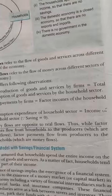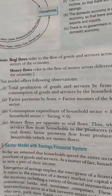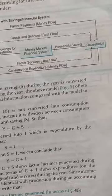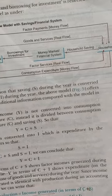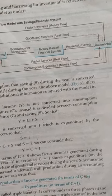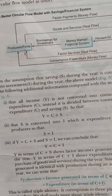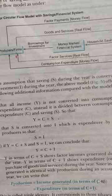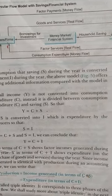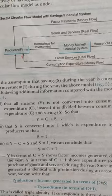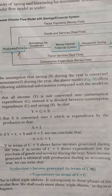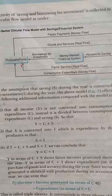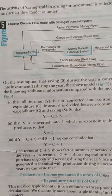Now we have the financial system — the money system — included. In the two-sector model figure, we have consumption expenditure, goods and services, factor payment, and factor services. With saving added, the household saving goes into the financial system or money market, completing the circular flow model with saving.